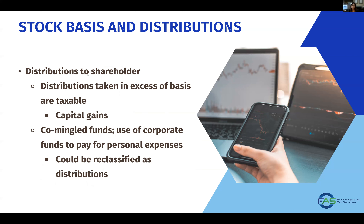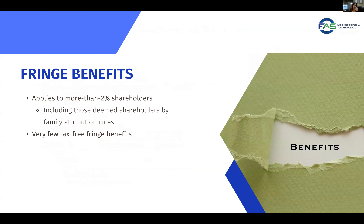Distributions taken in excess of basis are taxable as a capital gain. The co-mingling of funds — using corporate funds to pay for personal expenses — can also be reclassified as distributions and results in a reduction of the shareholder's basis.